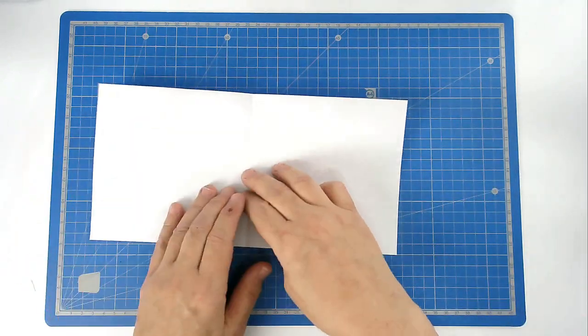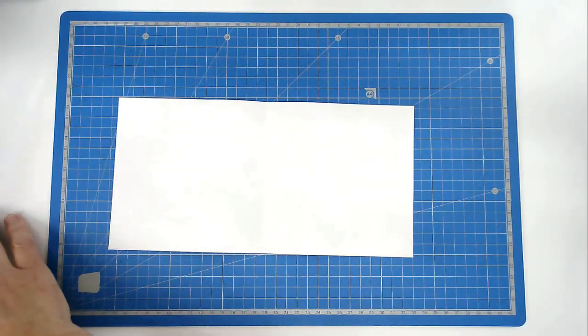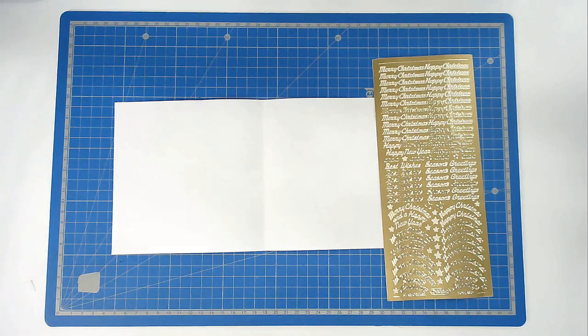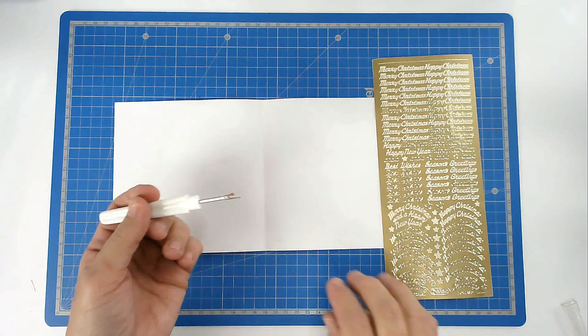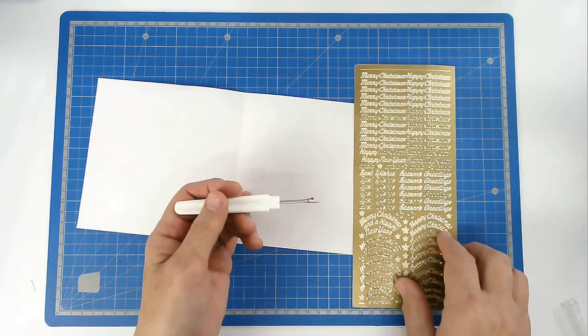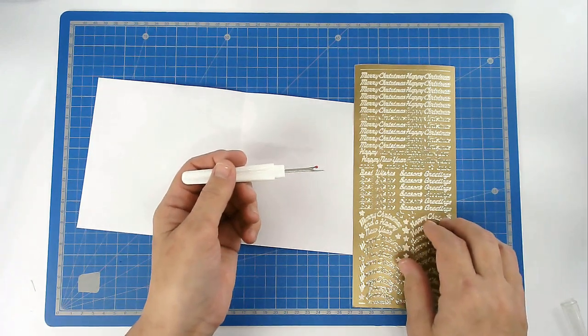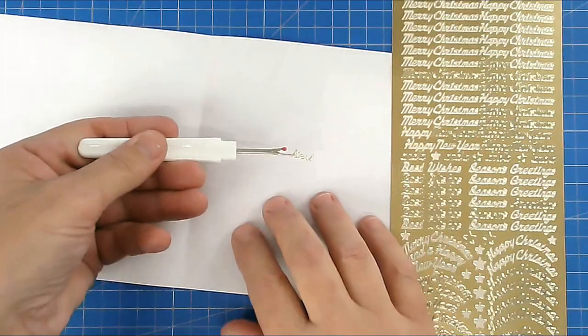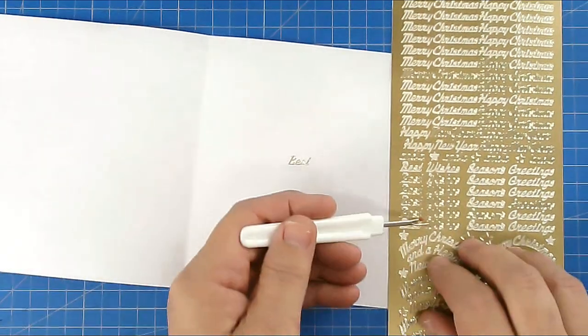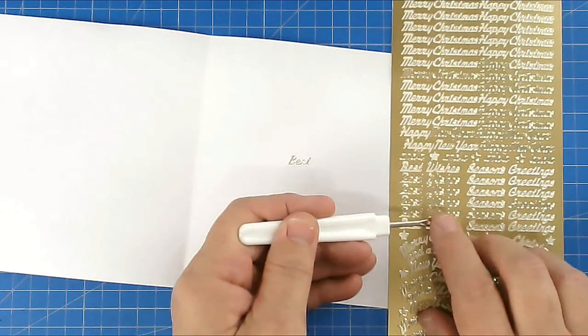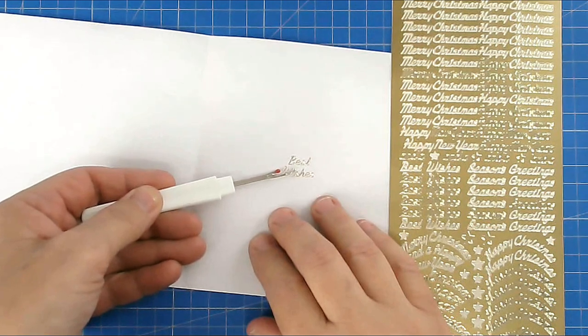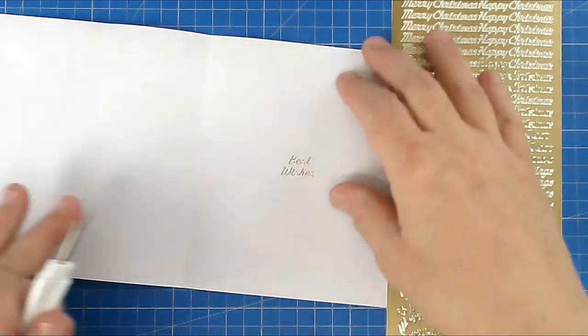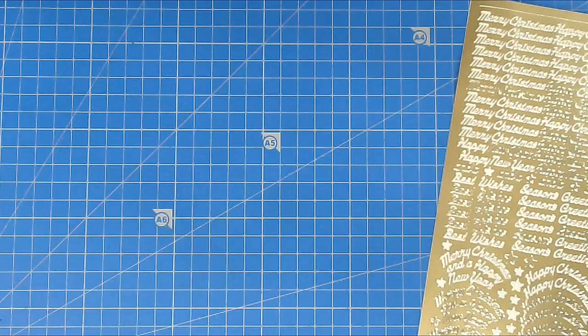Then we are going to add the greeting inside. I've got my stickers here and my stitch unpicker, and we're just going to use that so we can position them. I've got several different greetings on here and I'm going to go for best wishes. Just lift them off and center them. That's our insert all ready to use. I'm going to put that aside.